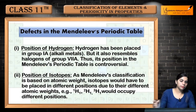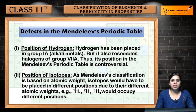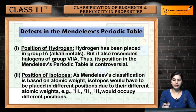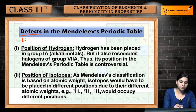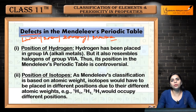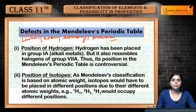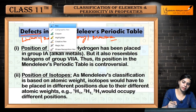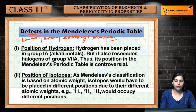However, there were also limitations that had to be overcome, which led to the modern periodic table. The defects, limitations, shortcomings, and drawbacks of Mendeleev's periodic table are important topics. You can be asked questions about the drawbacks or the importance of Mendeleev's periodic table.